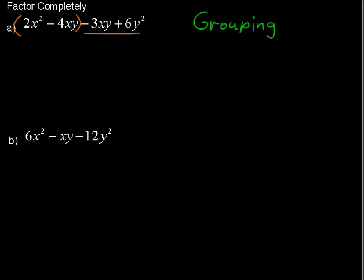For this first group, what can we factor out? What is common among 2x squared and negative 4xy? That is 2x — a 2 and an x can be factored out of each of those terms. What's left is x minus 2y: 2x times x gives 2x squared, and 2x times negative 2y gives negative 4xy.